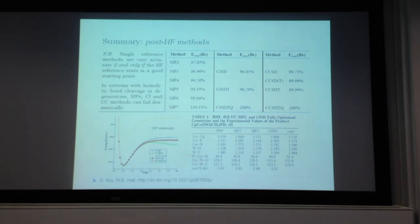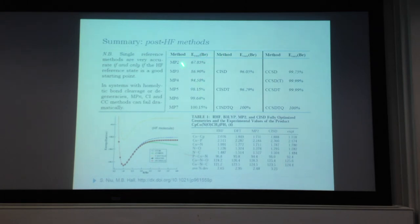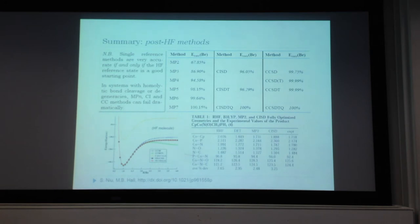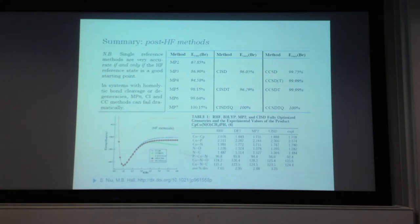Bottom line: single-reference methods are very accurate if and only if the Hartree-Fock state was a decent initial approximation. If there is bond cleavage or degeneracies, they can fail. Starting from Hartree-Fock and systematically taking higher-order perturbation theory, CI, or coupled cluster, CI-SDTQ or CC-SDTQ typically recover 100% of the correlation energy. For singles and doubles, CI-SD only recovers 96% while CC-SD recovers 99.7%, making coupled cluster preferred.